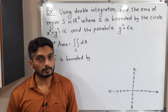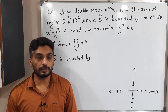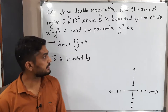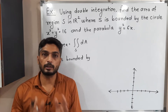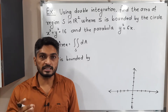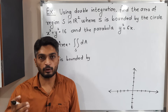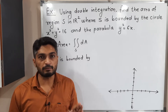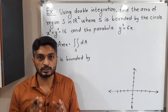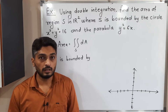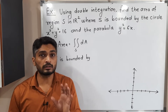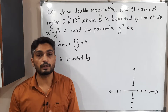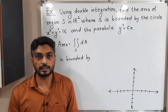Let us discuss this example. In this example we have to find area using double integration. The formula is: area equals double integration dA, meaning dx dy or dy dx. There is no function, we simply have to find the limits of integration and by solving we will have the area. The important thing is to find the region of integration.